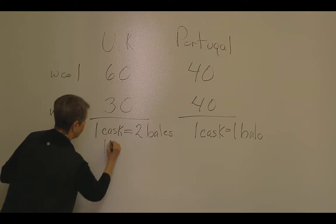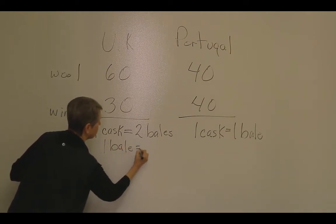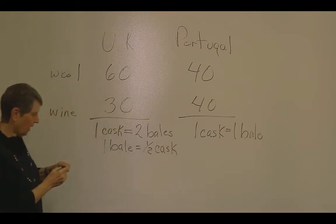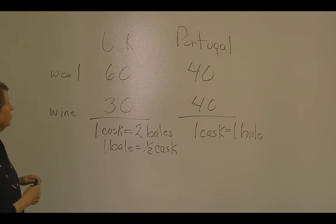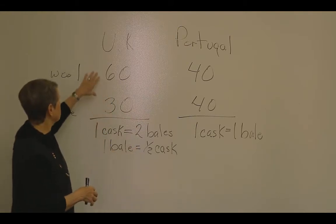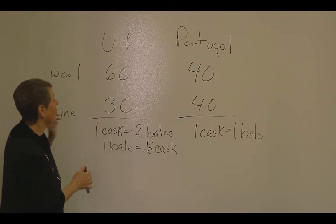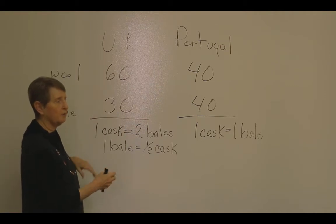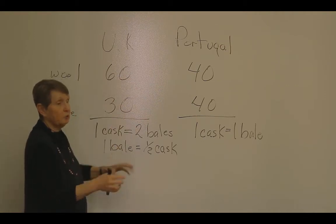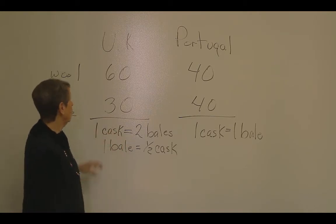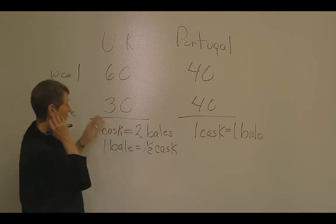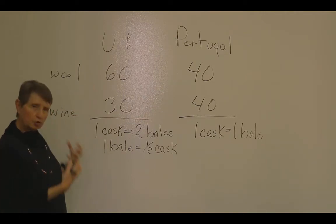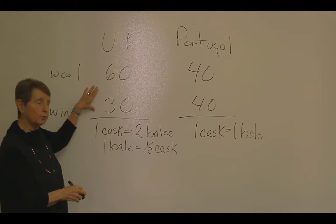We can also express the price of a bale: one bale equals one half cask in the United Kingdom. Now, any time there's a difference in the relative efficiencies of two countries in the production of goods, there are gains to be had from trade. Before any trade takes place, if these two countries don't trade, they're limited to consuming whatever it is they can produce. If we draw production possibilities curves, we can illustrate this.